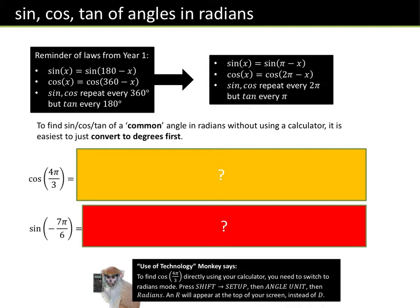In your calculator you need to click shift mode, and one option will say degree and one will say rad — we want to be in rad form. On the new calculators, click shift menu, then number 2 says angle unit, and select radians. You should then see a little box at the top which says R — you are now in radians. One of the biggest mistakes in our Pure One exam is forgetting to change between radians and degrees mode. Please make sure your calculator is in the right mode for each specific question.